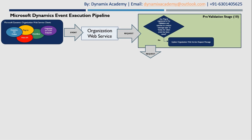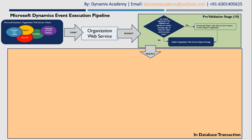If there are plugins registered that match the message type and entity for which the event has been raised, the server will first execute that plugin code under the user context for which the plugin is registered. After its execution is completed, it will update the organization web service request message and that updated request message will be passed on to the next stage.